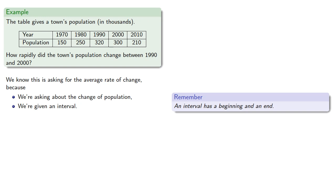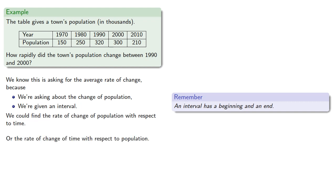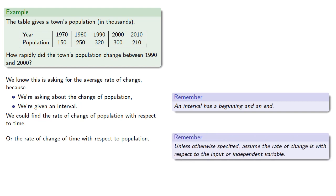Now, we have two changes, so we could find the rate of change of population with respect to time, or the rate of change of time with respect to population. In general, unless otherwise specified, we'll assume the rate of change is with respect to the input or independent variable, which in this case is time, and so we'll find the first.